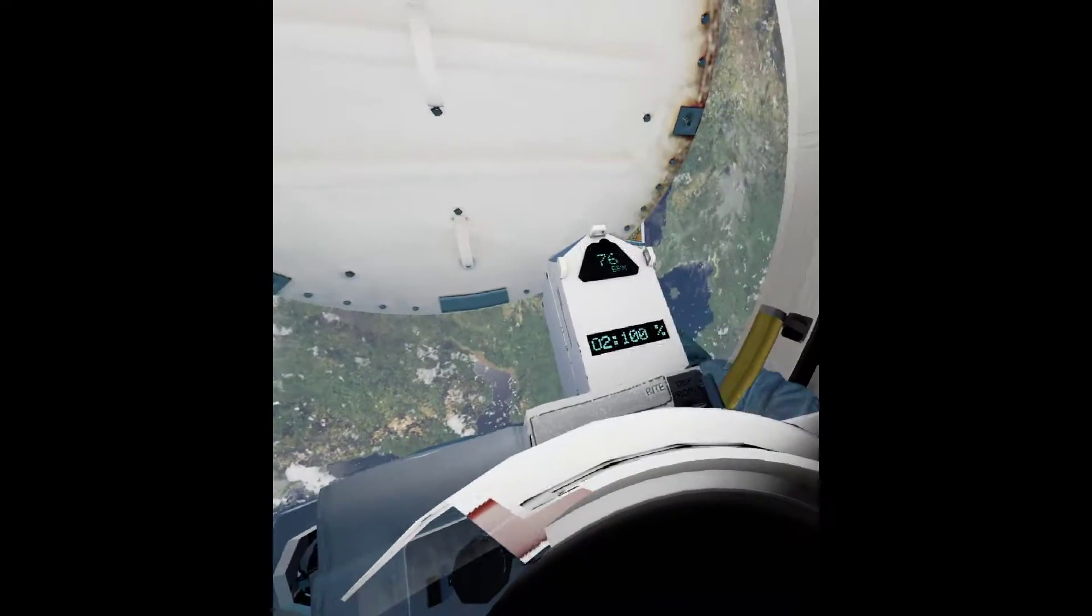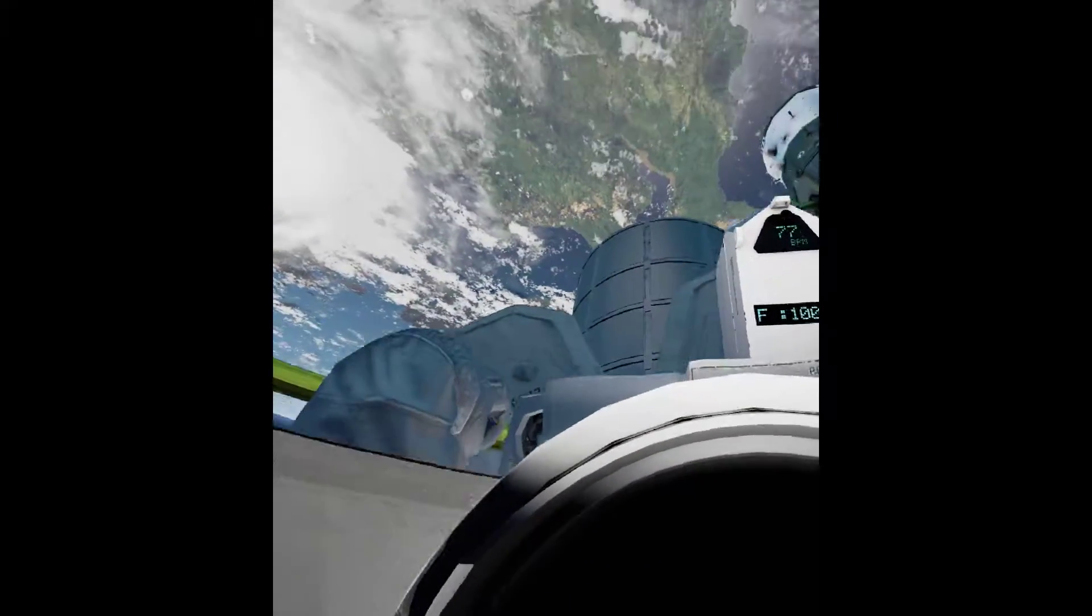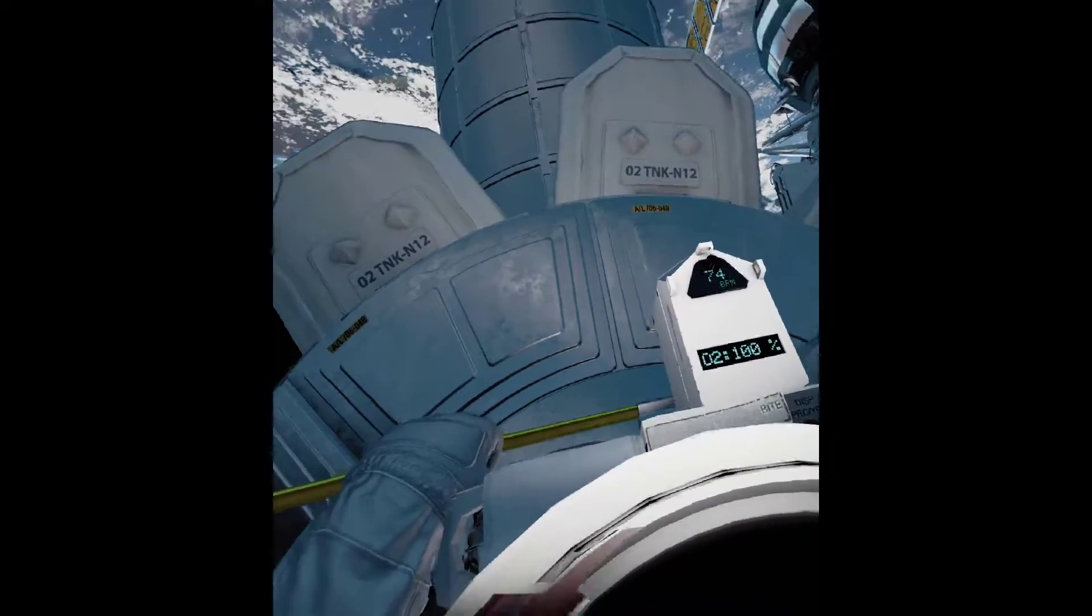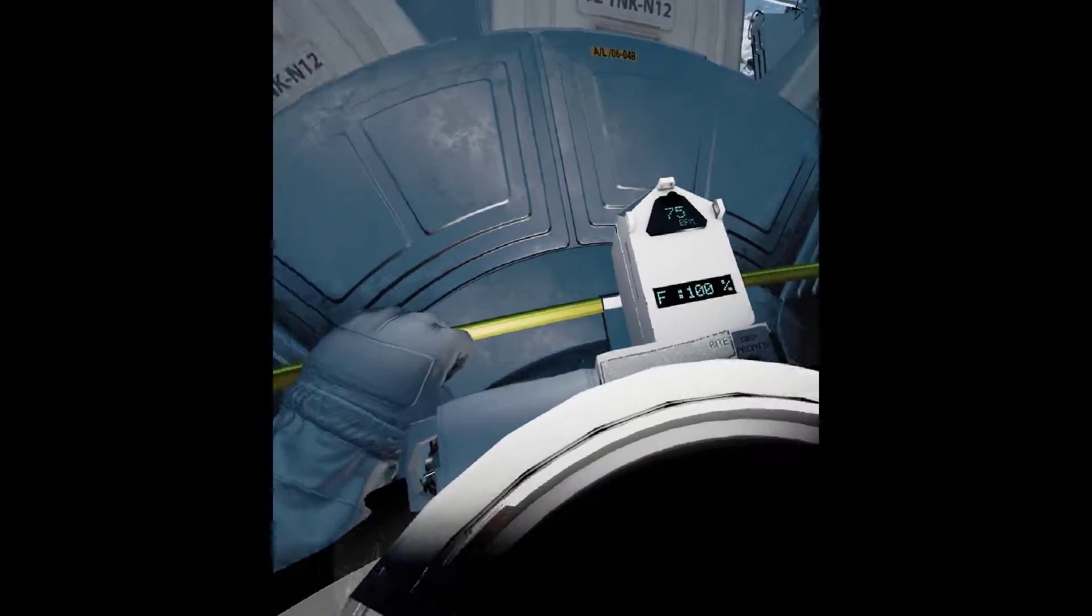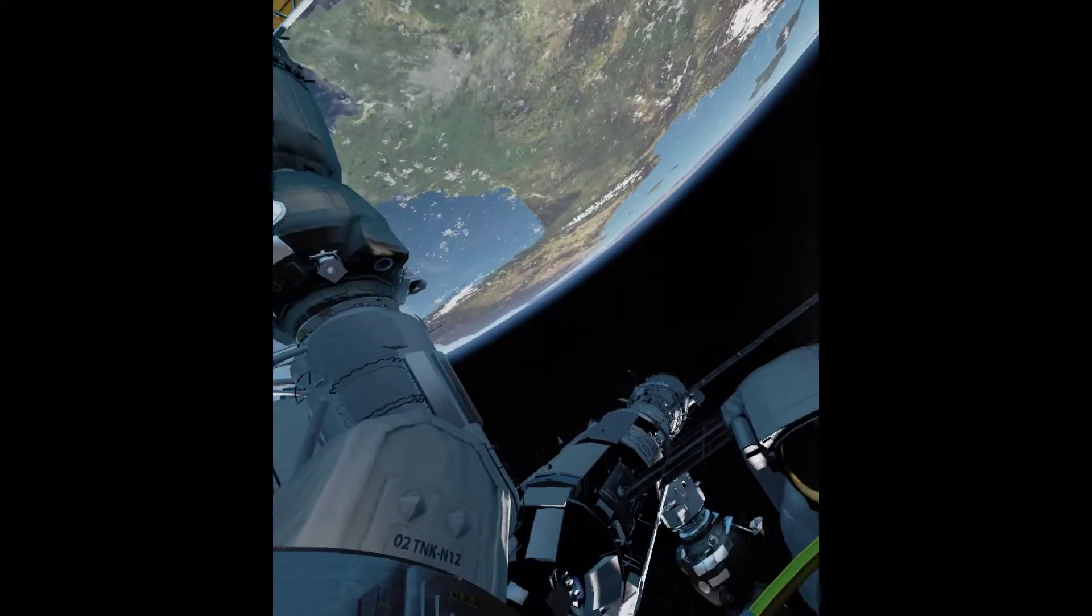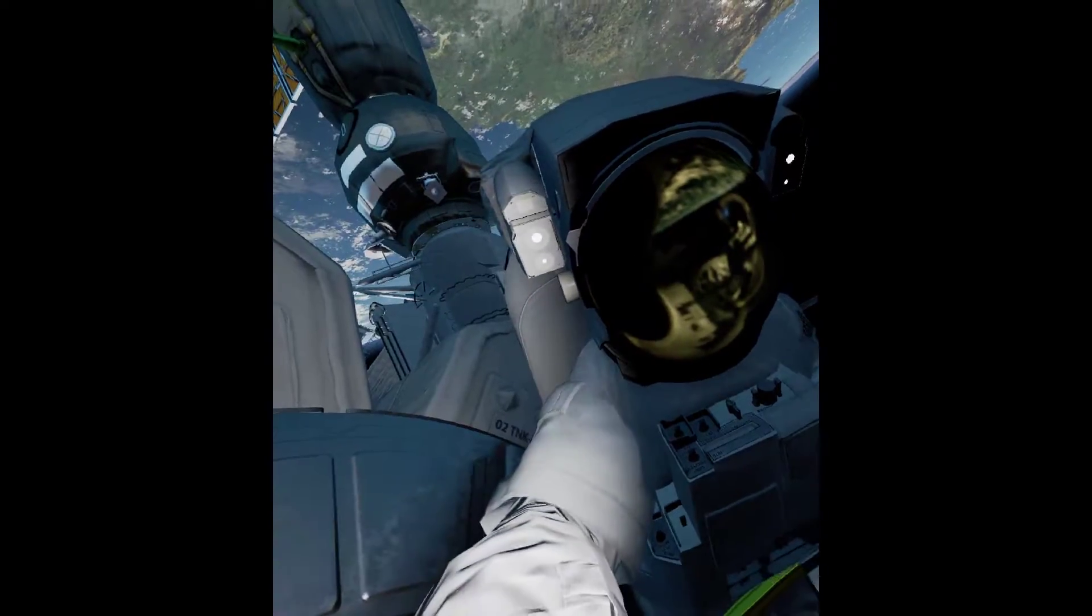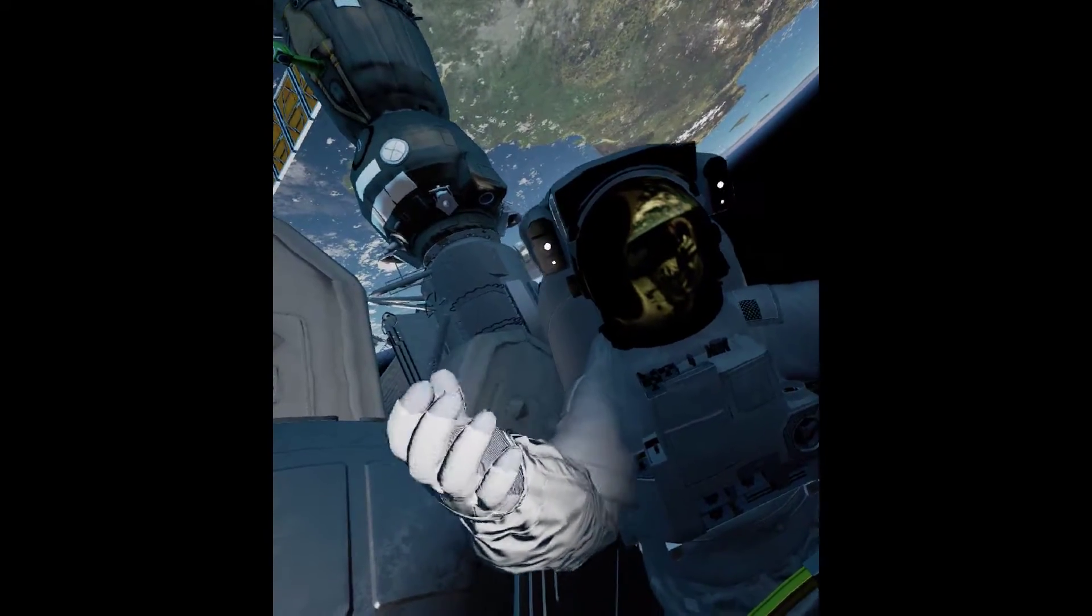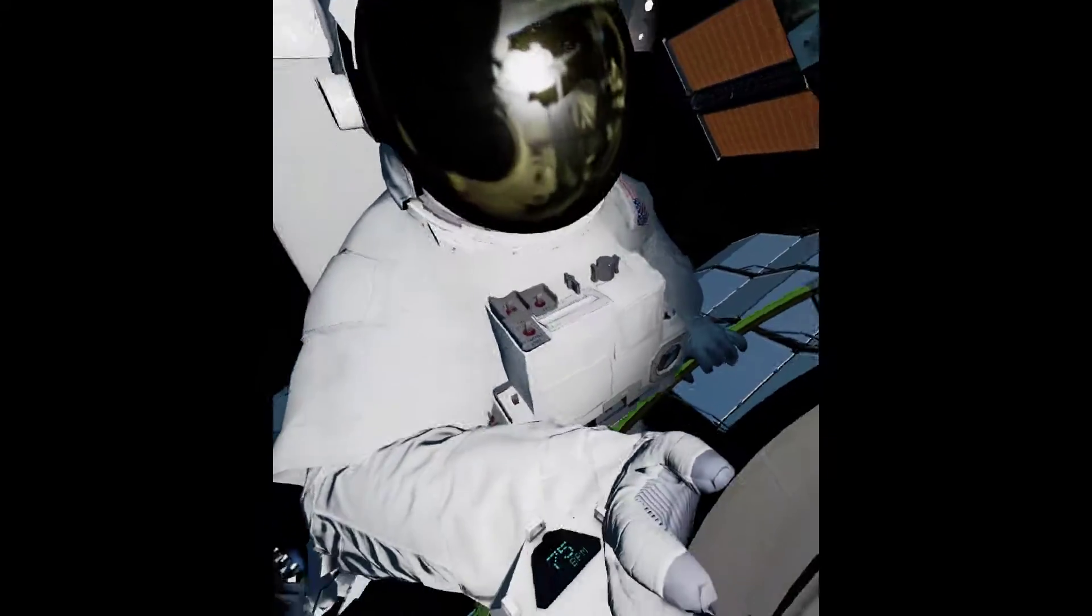Copy that, Houston. Airlock hatch is opening. EV-2, your toolbox is attached to your waist belt. We are ready for you to move outside. Grab hold of the yellow handle. Pull yourself up. Come on, I'm stuck. Give us a wave, EV-2. Now. Hey, newbie. Great you can join me.